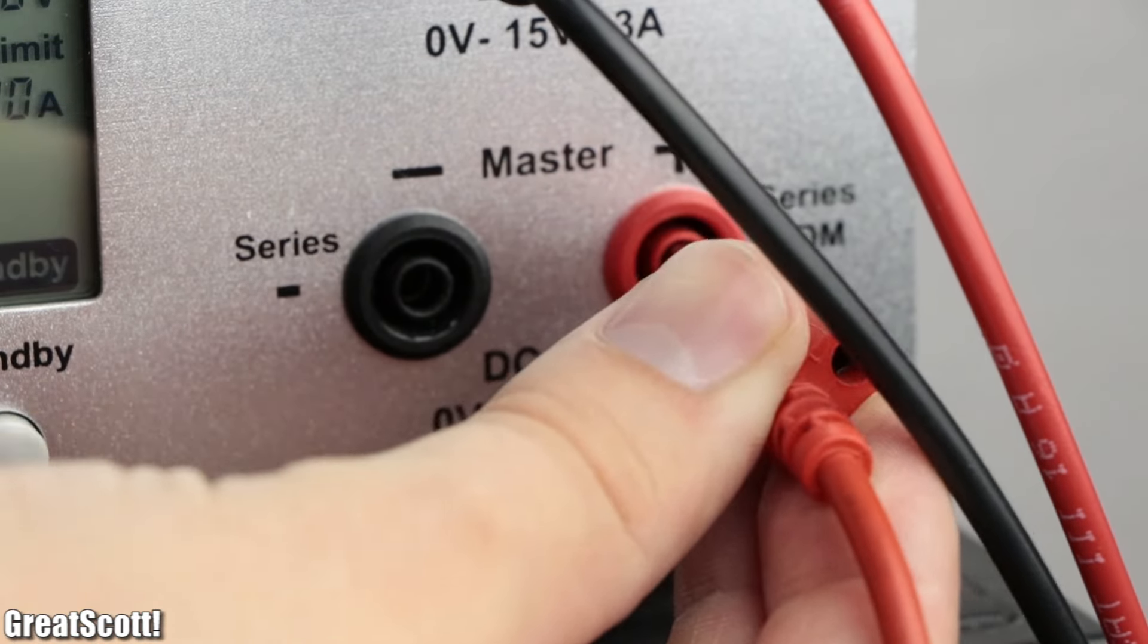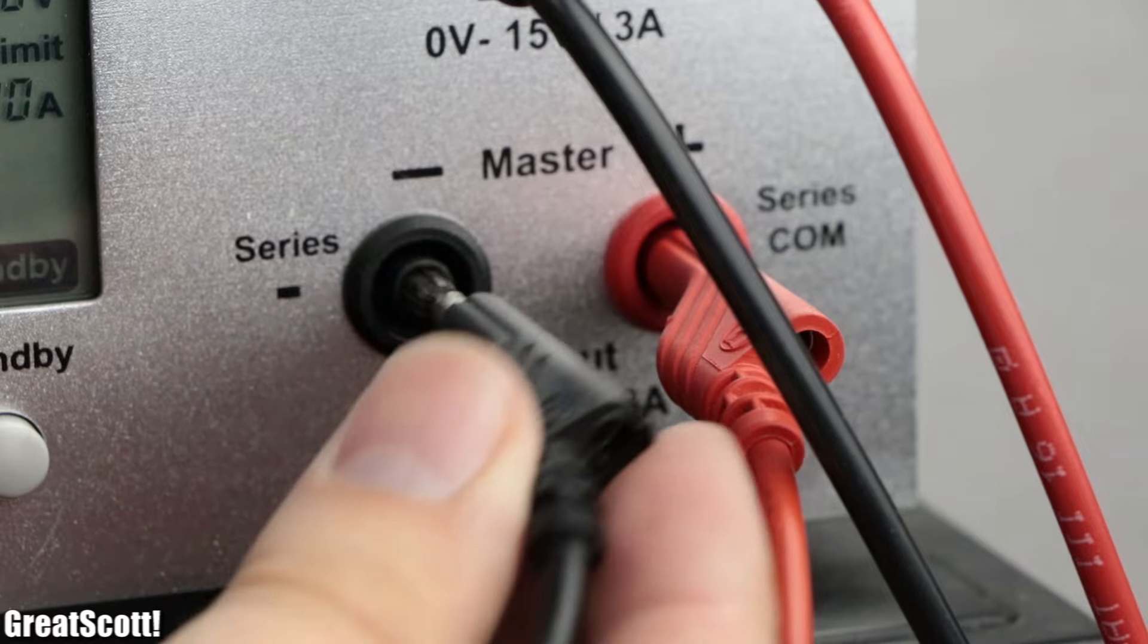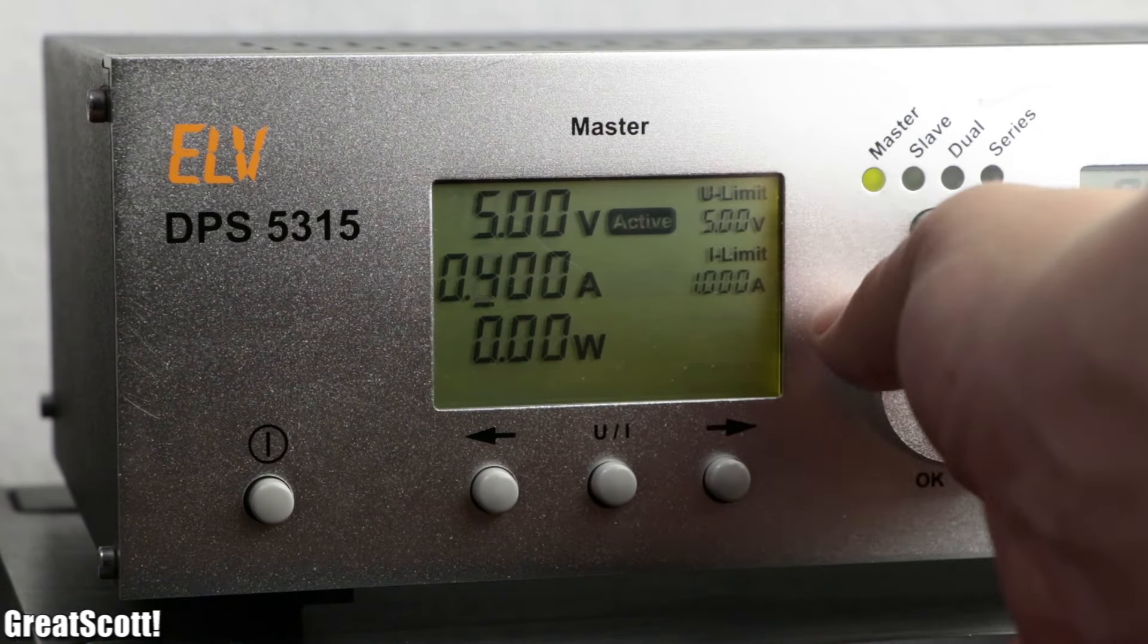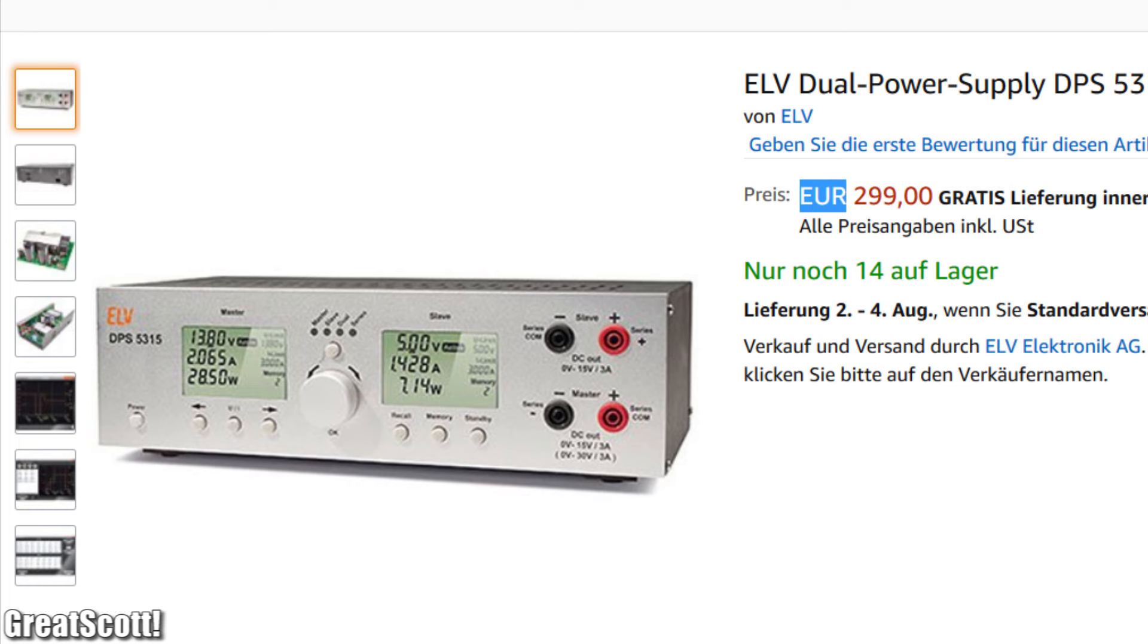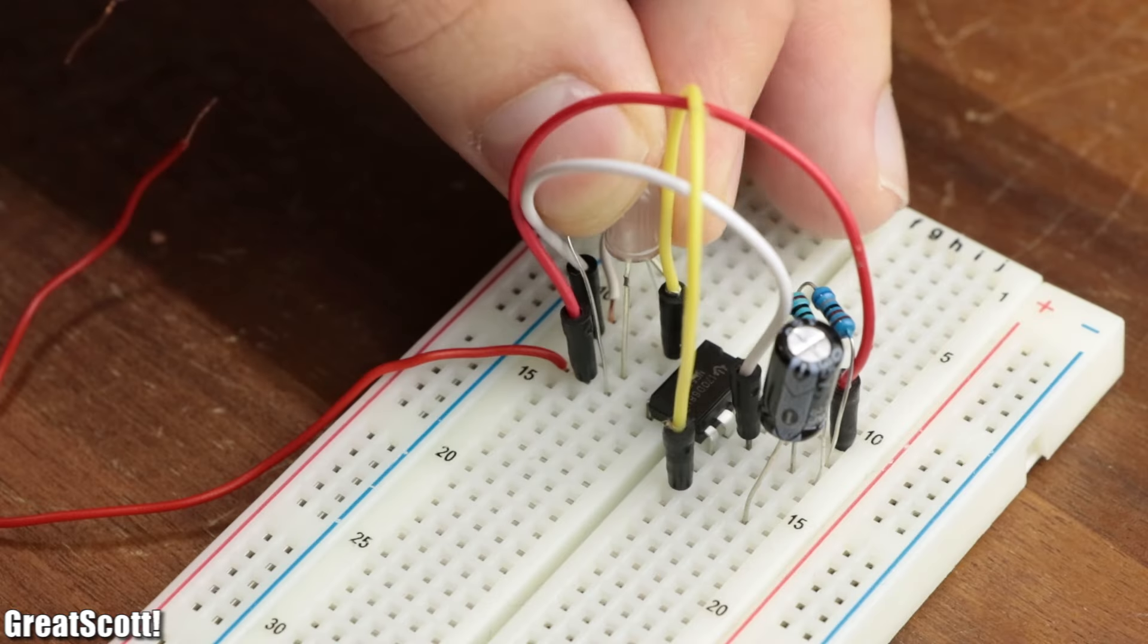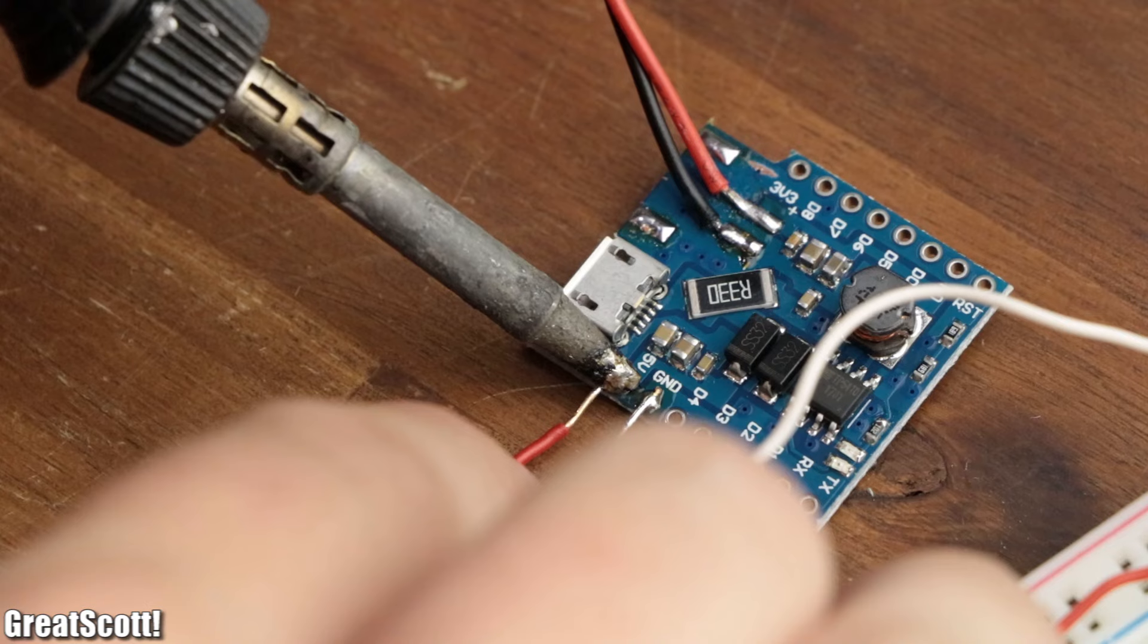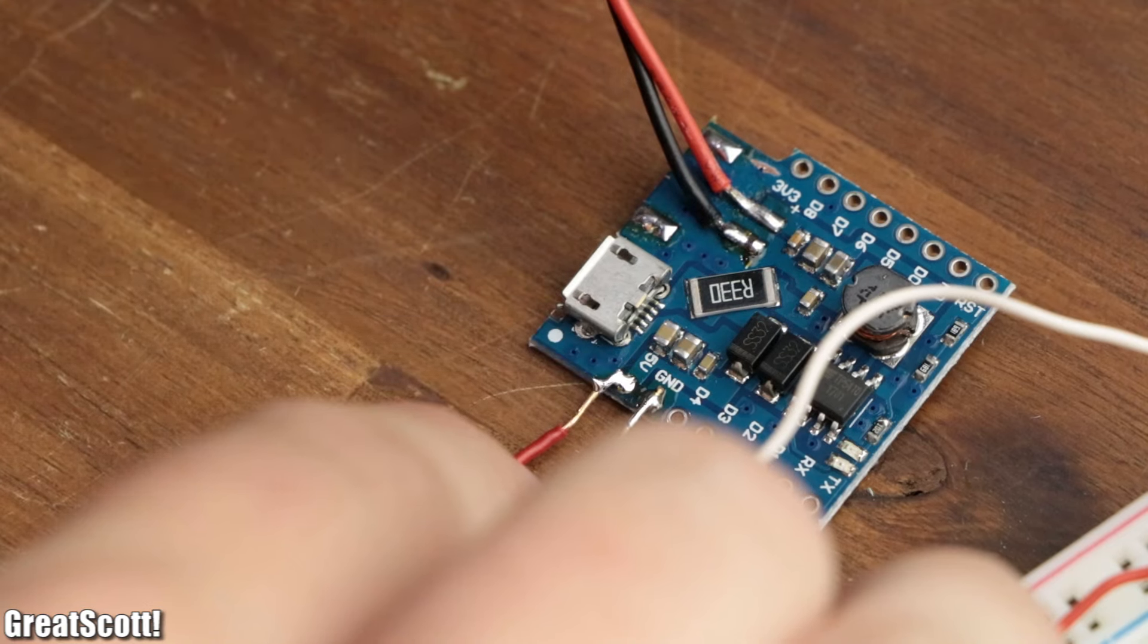One solution to this problem is to use a variable lab bench power supply with a current limit function so that we can prevent a big current flow when an error occurs. But those are pretty expensive and obviously not usable when you want to create a battery powered project or something similar.